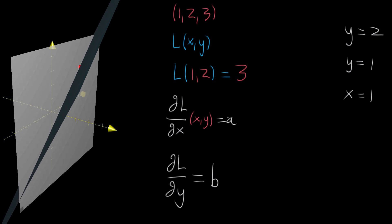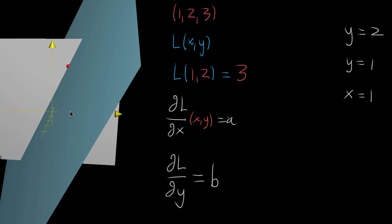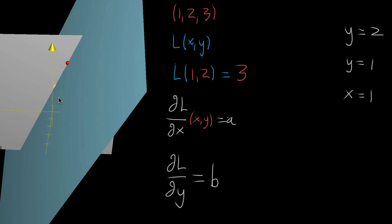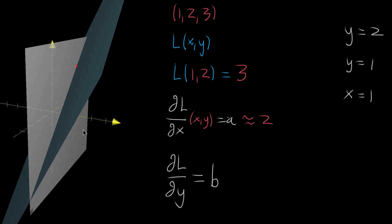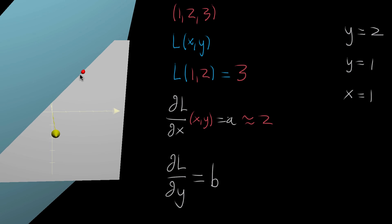Geometrically, we can estimate what these values should be. Taking the plane representing a constant y value, we ask: what's the slope as we move in the x direction? I would estimate this as about a slope of two — you go over one and it goes up two. And then looking at a constant x value, representing movement in the y direction, that slope looks to me like about one — you move over one unit, you go up one unit. So the constant value of the partial derivative with respect to y is about equal to one.